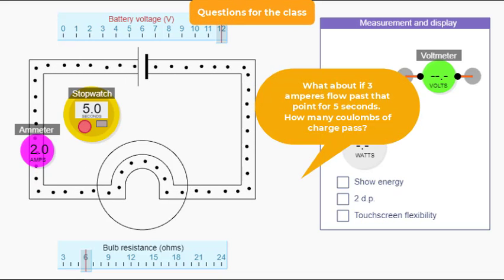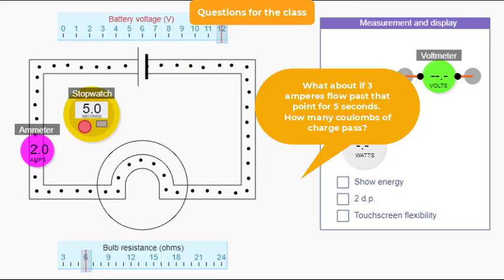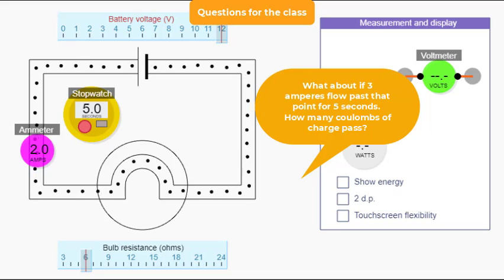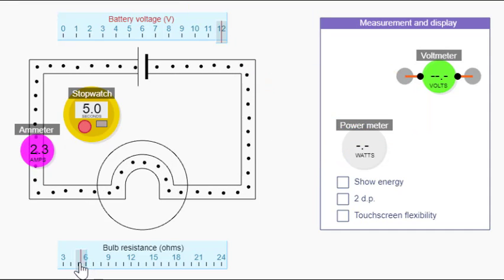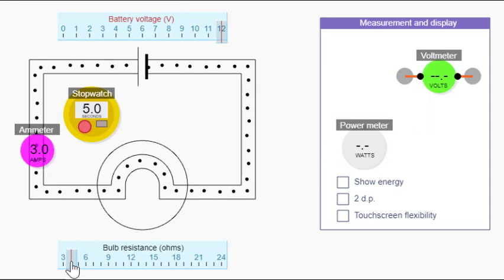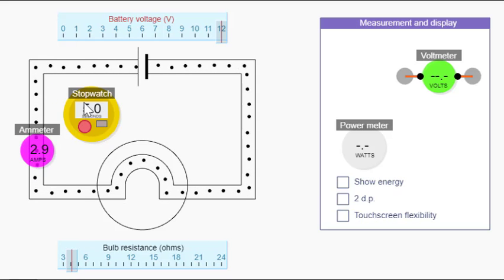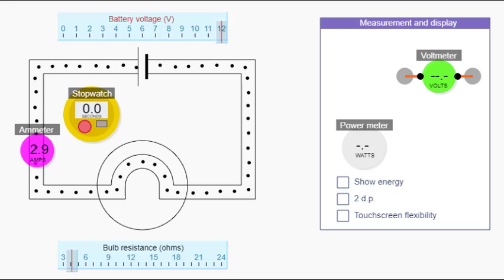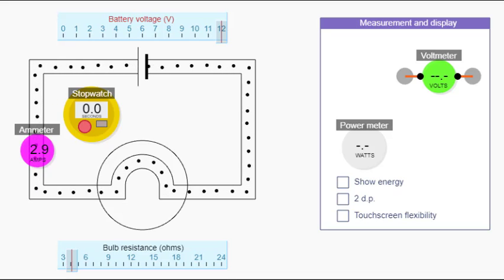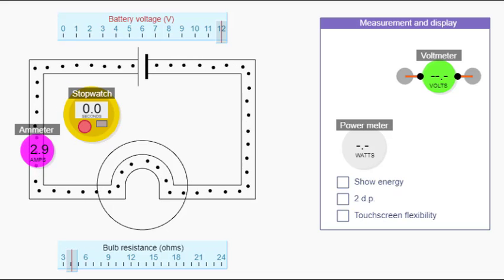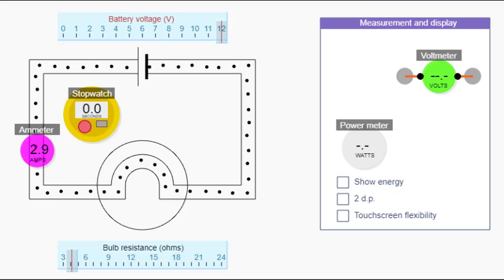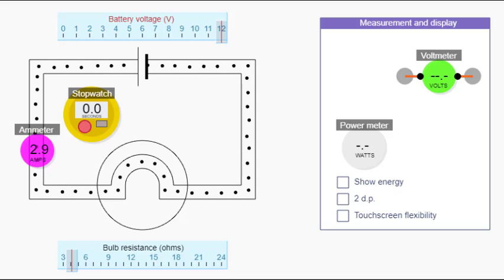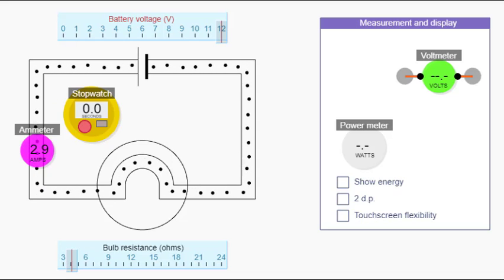What about if three amperes flow past that point for five seconds? How many coulombs of charge pass? Let's adjust the resistance to make it three amperes and reset the stopwatch. Three amperes is three coulombs of charge passing a point each second, so in five seconds three times five equals fifteen coulombs of charge should pass that point.